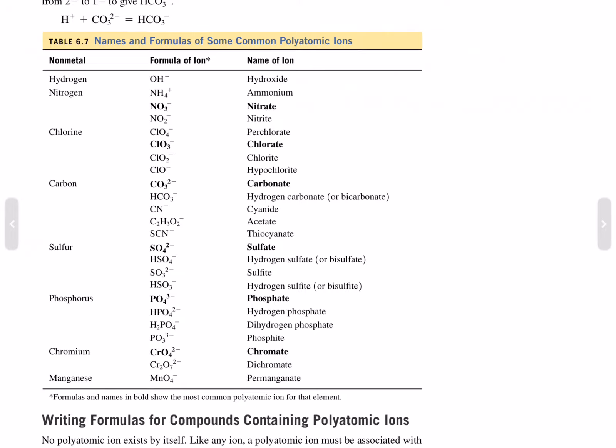PO4^3-, phosphate. HPO4^2-, hydrogen phosphate. H2PO4^-, dihydrogen phosphate. PO3^3-, phosphite. CrO4^2-, chromate. Cr2O7^2-, dichromate. And MnO4^-, permanganate.